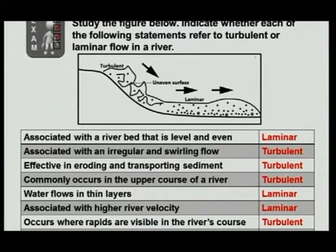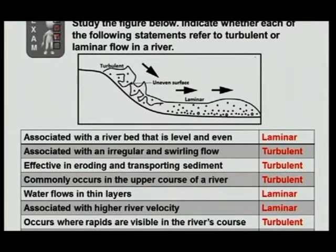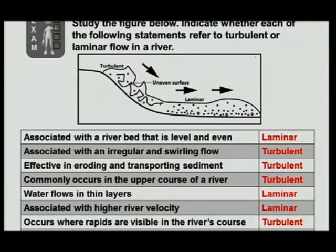The question was as follows: study the figure below and indicate whether each of the following statements refers to turbulent or laminar flow in a river. Here we've got the diagram — turbulent flow on one side and laminar flow on the other. I hope you've made a mental note of the images from the previous slides. All you had to do was look at a few statements and say: is it laminar or is it turbulent? Easy as that.